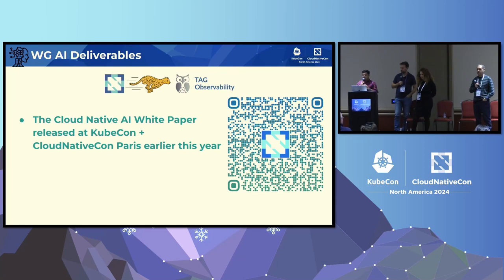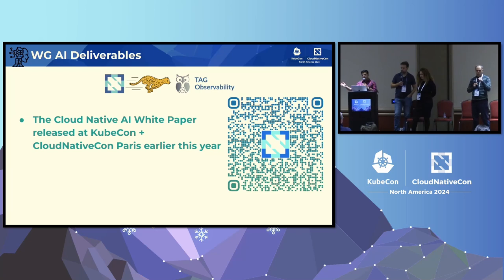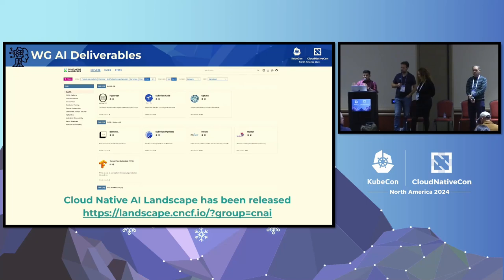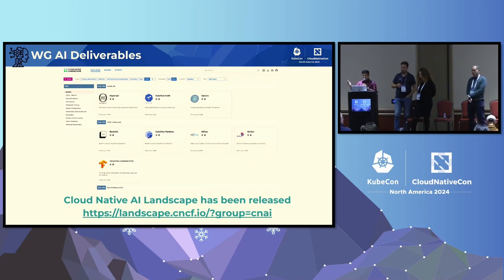The white paper talks about challenges of running AI workloads on cloud-native infrastructure, what possible remediations are, and what is meant by the integration of cloud-native and AI. This has been one of the first deliverables of this working group. The other thing we got done was a landscape for cloud-native AI in the CNCF landscape. If you go to landscape.cncf.io, you get a CNAI tab — that was another deliverable that came out of this working group.